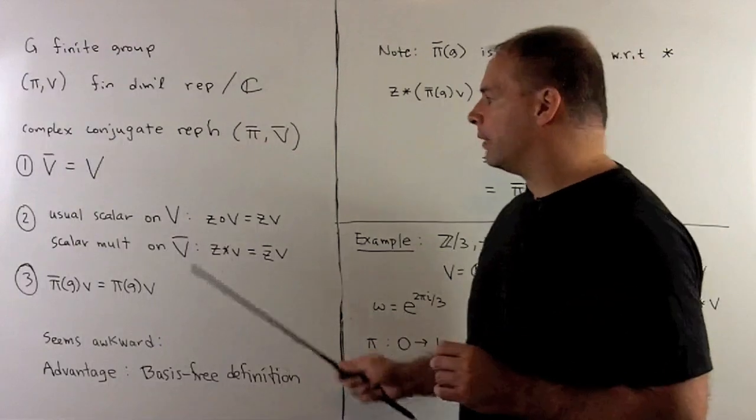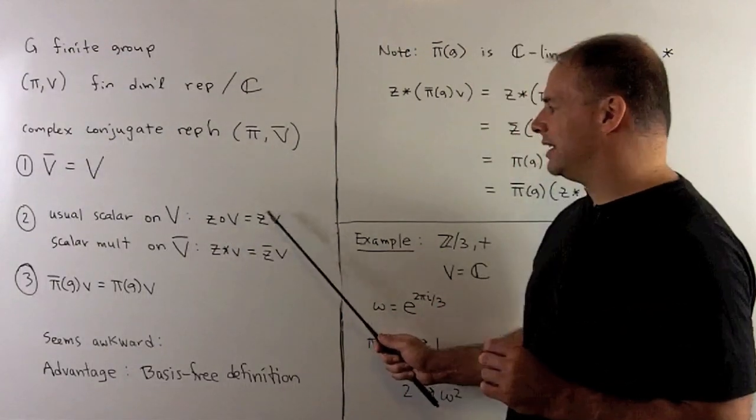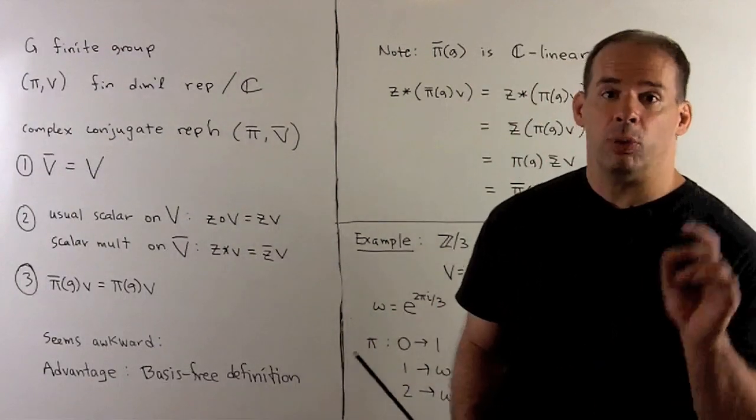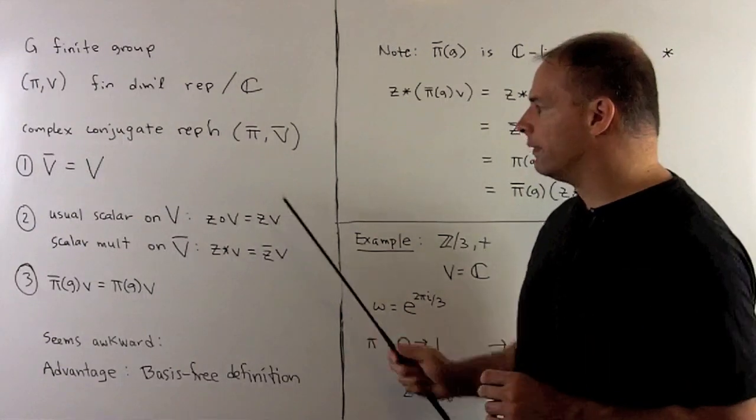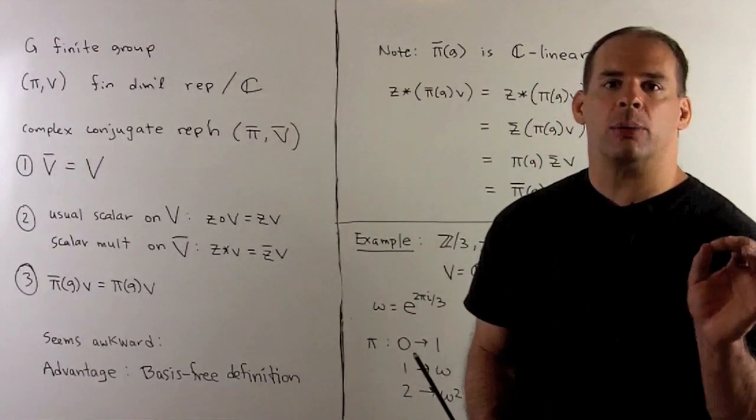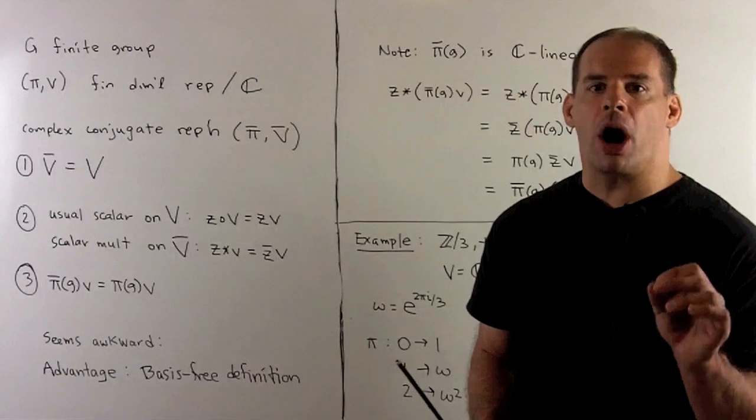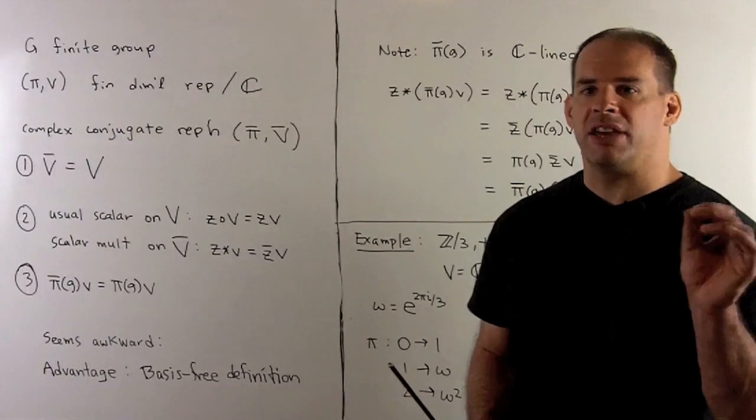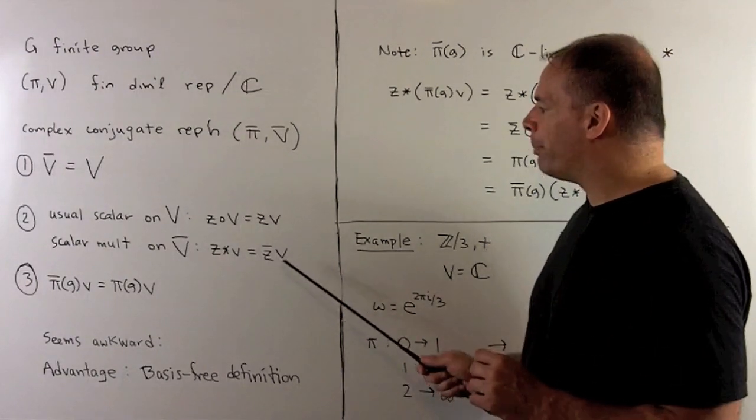If the scalar multiplication on V, just denoted as Z times V, if we want to be clear, we'll call it Z circle V. Then, scalar multiplication on V bar by Z, just given by multiplying as usual by Z bar.